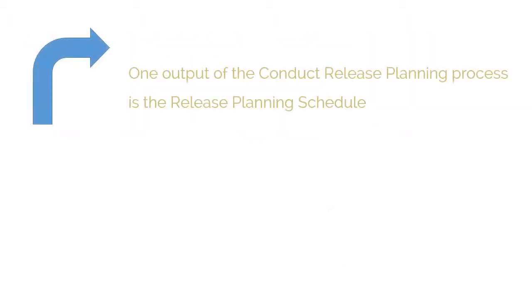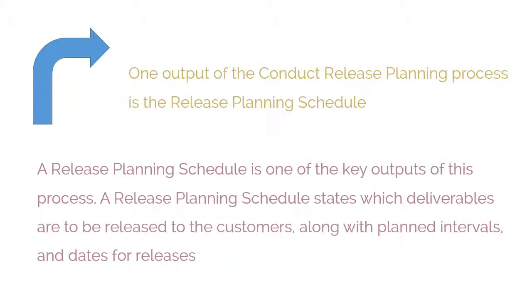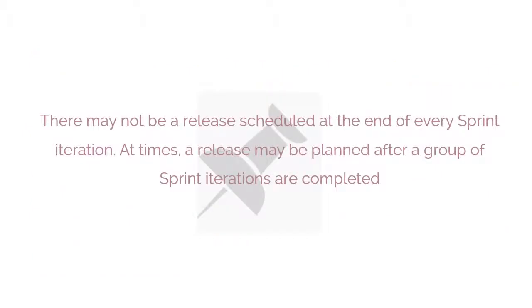One output of the Conduct Release Planning process is the Release Planning Schedule, which is one of the key outputs of this process. A Release Planning Schedule states which deliverables are to be released to the customers, along with planned intervals and dates for releases. There may not be a release scheduled at the end of every sprint iteration; at times, a release may be planned after a group of sprint iterations are completed.